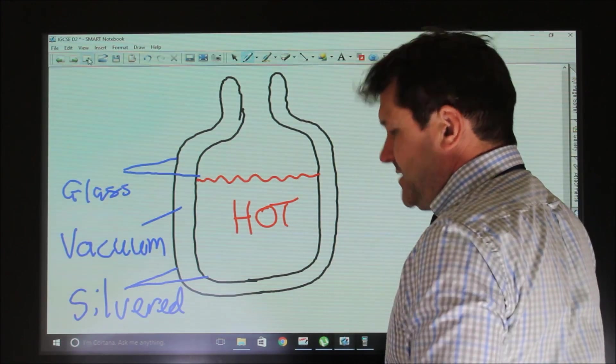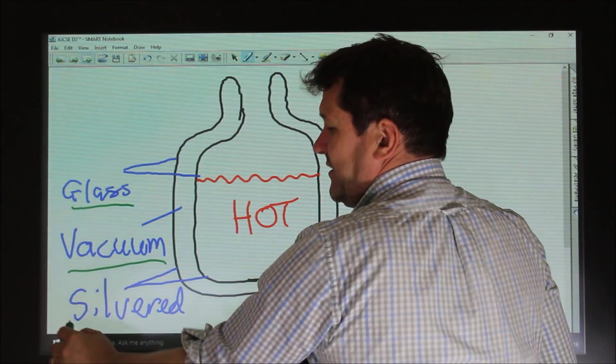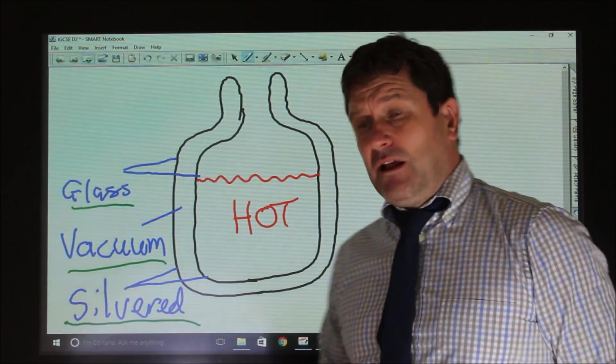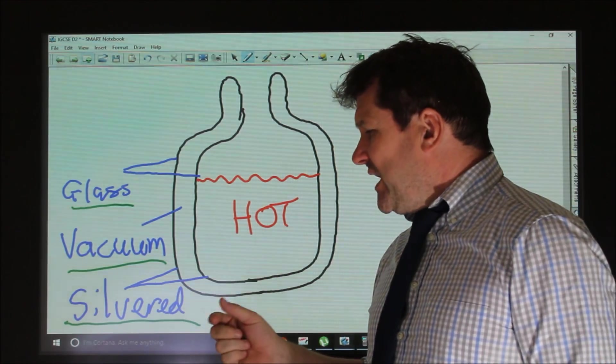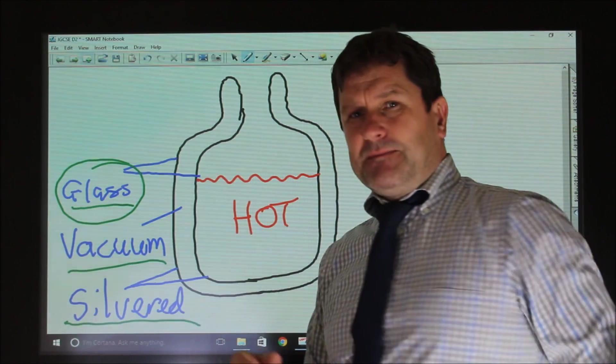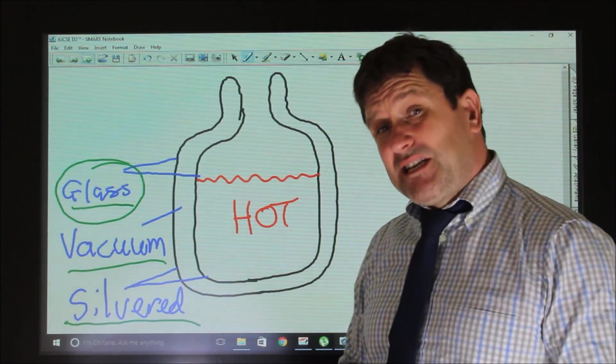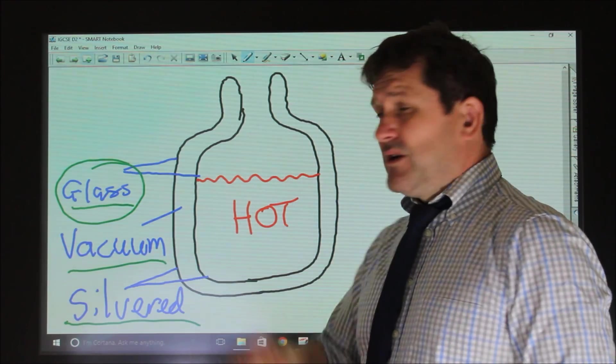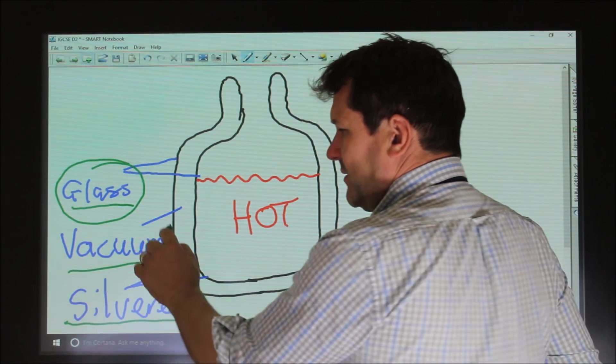In an exam context, if we were asked to discuss how have these three measures prevented heat loss from the coffee, from inside the vacuum flask, you would think about, glass, the walls are made of glass, glass is a relatively good insulator, it's not a conductor of heat. The next things, however, are more important.